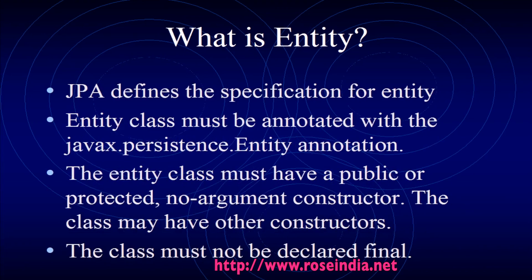JPA defines the specification for an entity. JPA is the Java Persistence API. The entity class must be annotated with the javax.persistence.Entity annotation. The entity class must have a public or protected no-argument constructor, though the class may have other constructors as well. The class must not be declared as final.